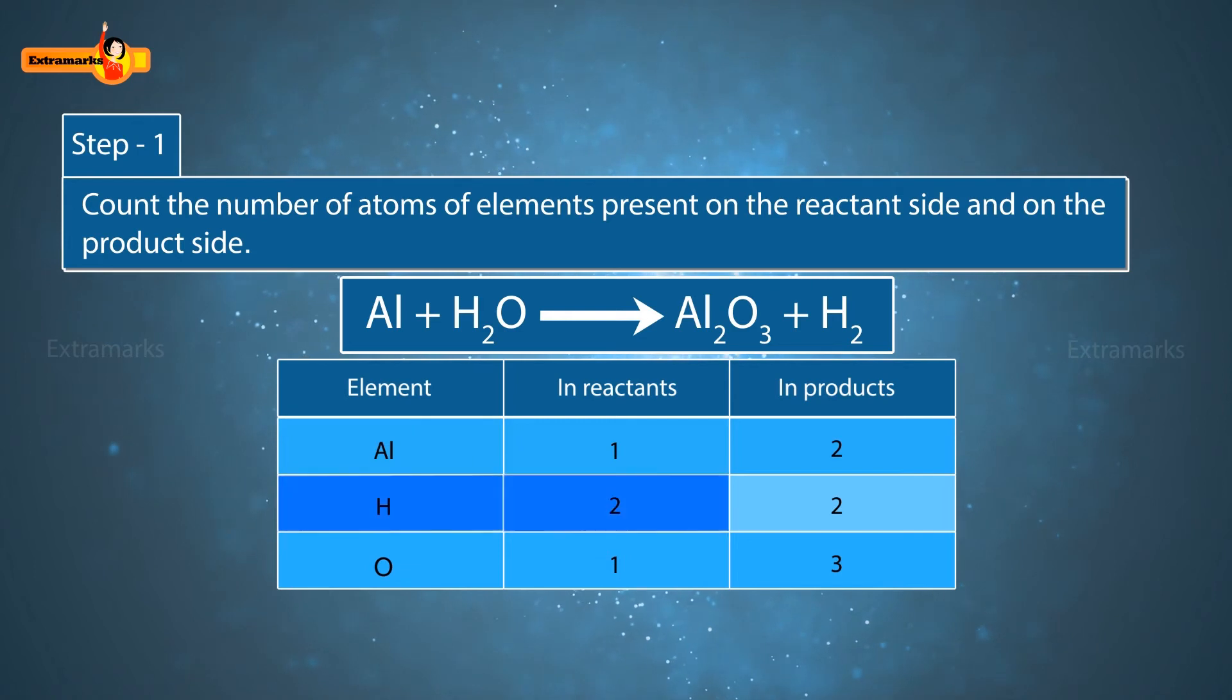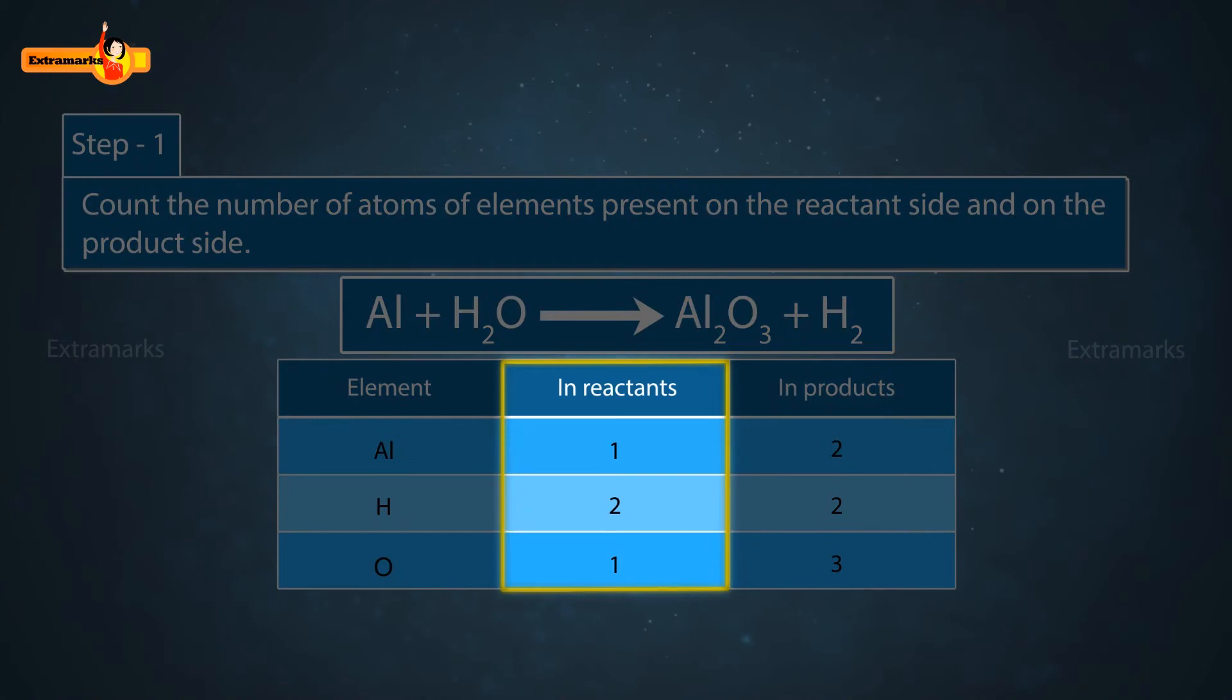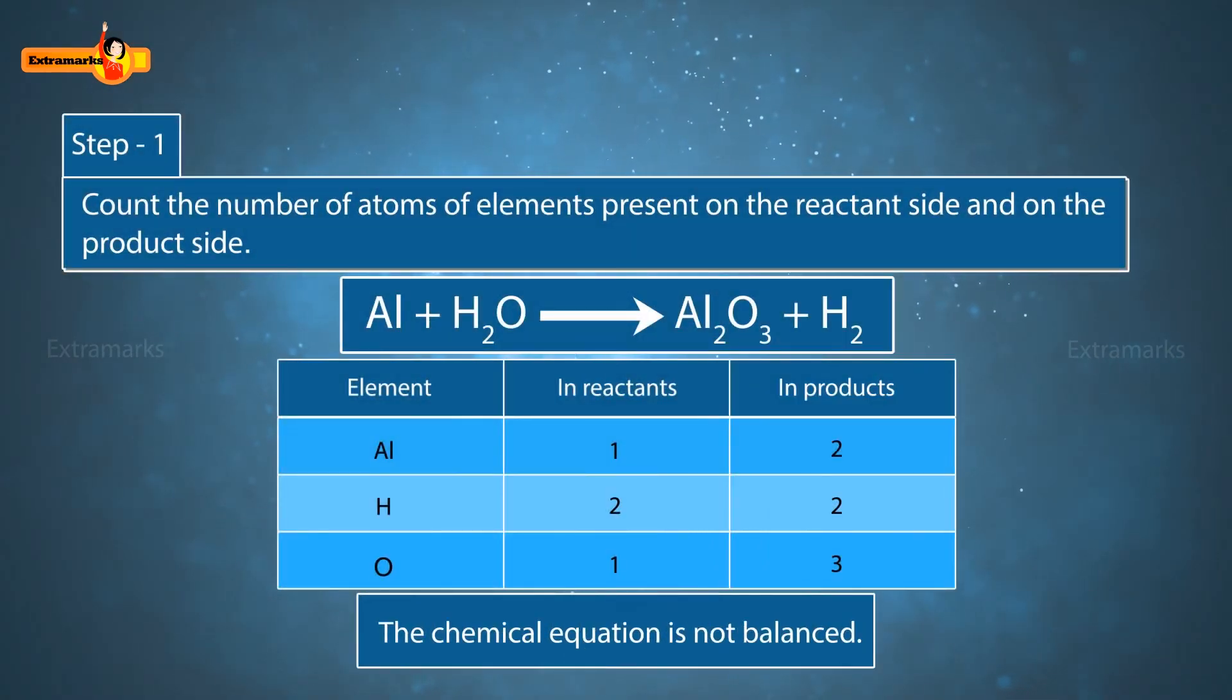There are 1 aluminium, 2 hydrogen and 1 oxygen in the reactants and 2 aluminium, 2 hydrogen and 3 oxygen in the products. Since the number of atoms in the reactants and products is not same, the reaction is not balanced. Let's balance this equation.